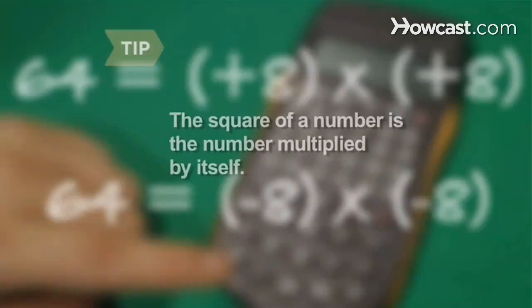Step 2. Calculate the squares of each of these lengths. The square of a number is the number multiplied by itself. The square root of 64, for example, is plus or minus 8, because plus or minus 8 multiplied by itself equals 64.